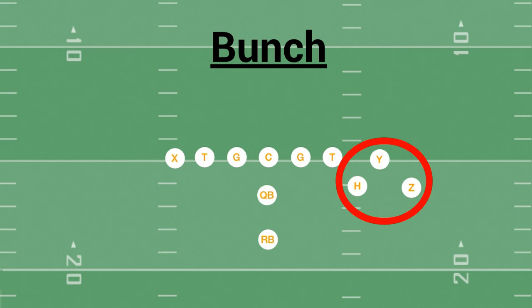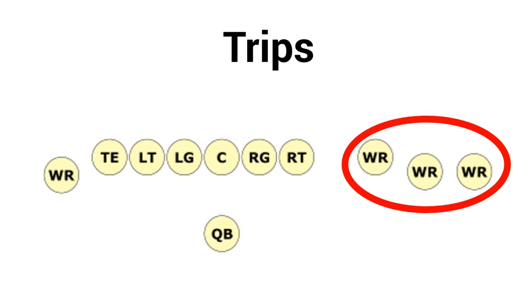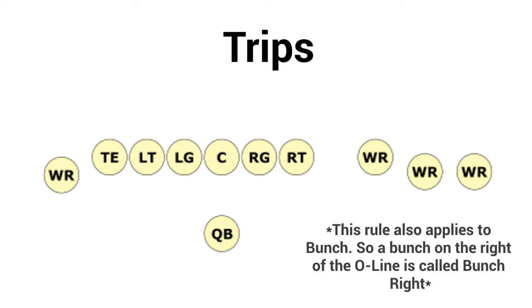There are two common ways you'll see wide receivers line up. One is called a bunch and one is called trips. A bunch is where you have one wide receiver in the middle and two on each side — it looks like a V-shape. Trips is when you have three wide receivers all on one side, lined up almost in a line. If the trips is on the right, it's called trips right; if it's on the left, it's called trips left.